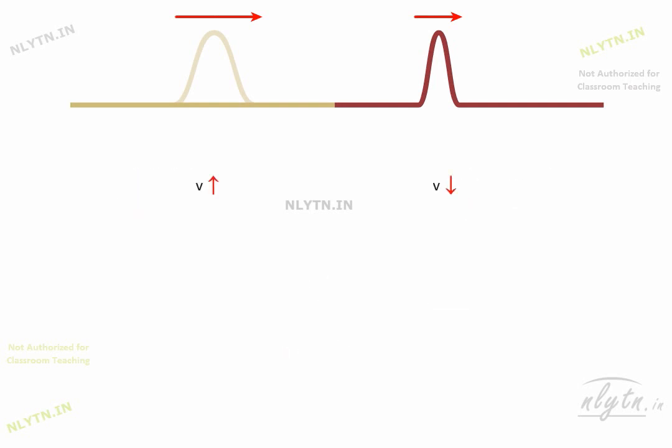However, since frequency of the wave is determined by the source, the frequency remains the same. So if we write the speed of the wave in terms of frequency and wavelength, then we can say that the wavelength of the wave also decreases.